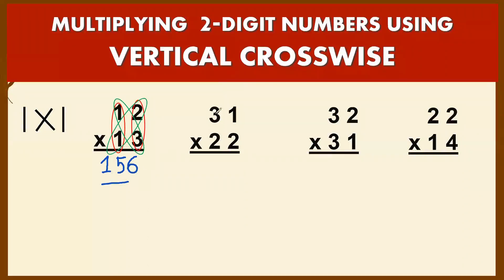Example number 2: 31 times 22. You multiply the first column, 3 times 2, that's 6. Then multiply crosswise: 2 times 3 is 6, then 2 times 1 is 2. 6 plus 2 is 8. Then the last column: 1 times 2 is 2. Now you got your answer: 682.